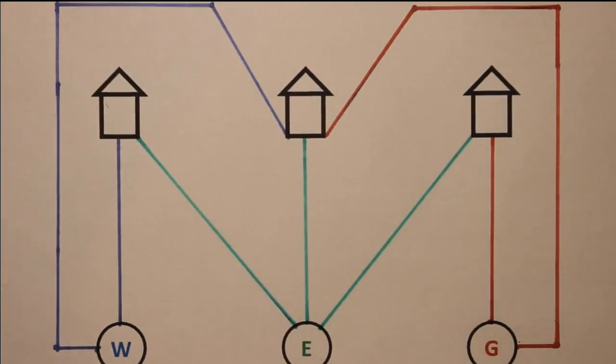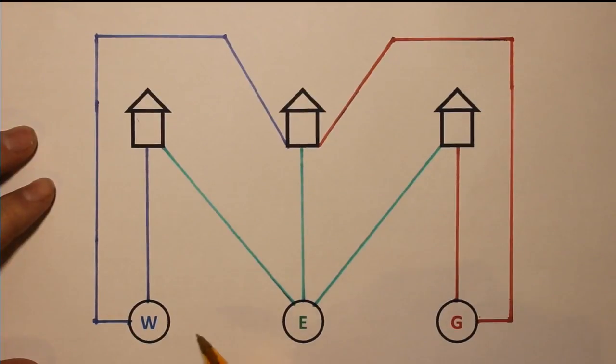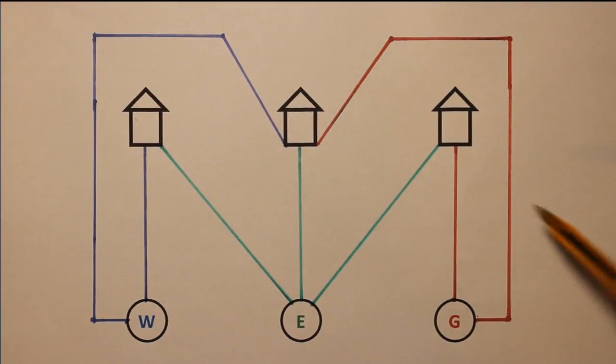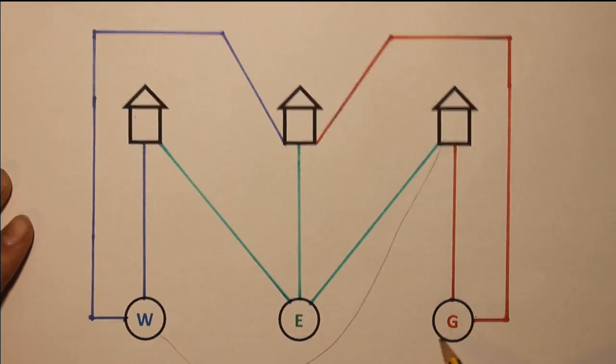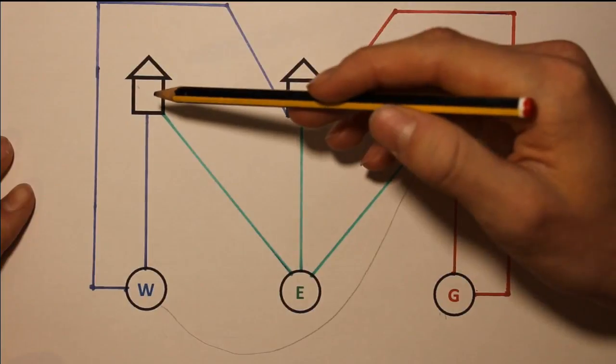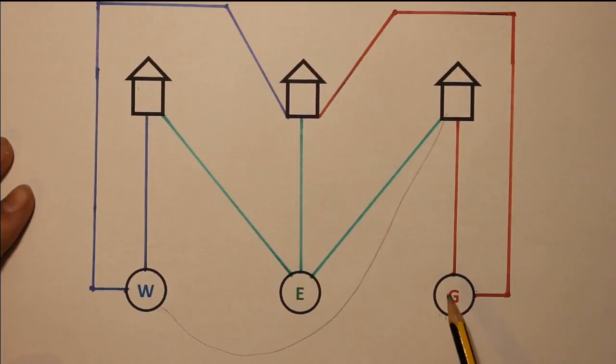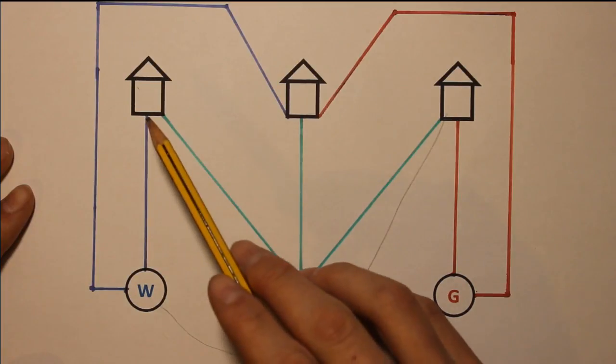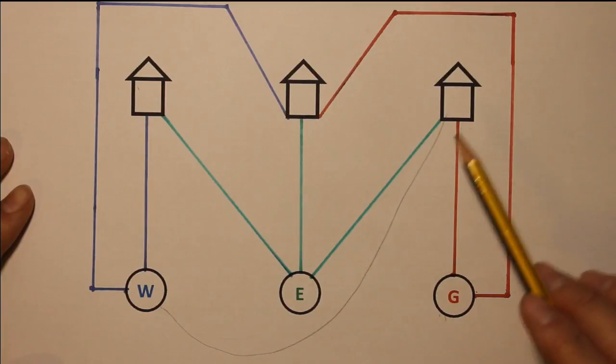So here, if I zoom out a bit, if we try and connect water to house number three what we will be doing is now blocking off any access of getting to house number one from gas. And the exact same rule applies if this was mirrored and gas were to be drawn to house number one we wouldn't be able to have any access from water to house number three.